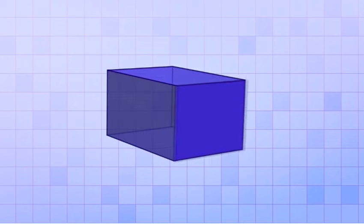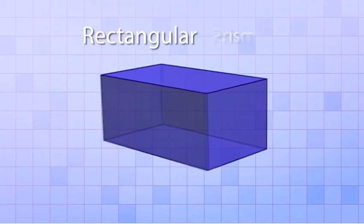For example, if you start with a rectangle and then extend it along the third dimension, you get a 3-D shape called a rectangular prism.